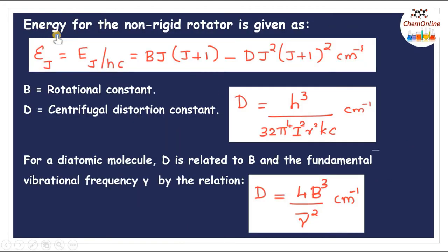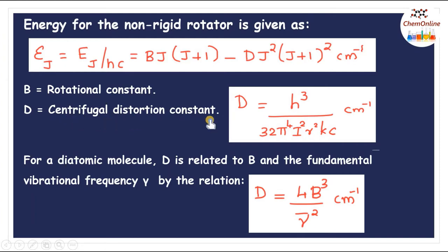The Schrödinger equation may be set up and the energy for such a non-rigid rotator is given as: ε_J = BJ(J+1) − DJ²(J+1)² in cm⁻¹, where B is the usual rotational constant and D is the centrifugal distortion constant. Its value is given by D = h³ / [32π⁴ I² r² kc] cm⁻¹.